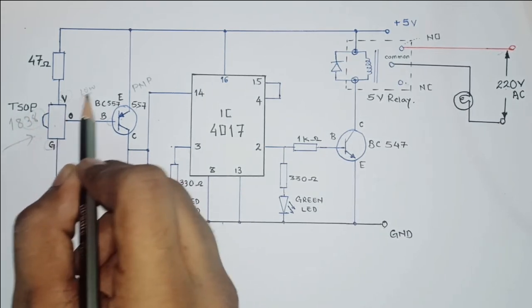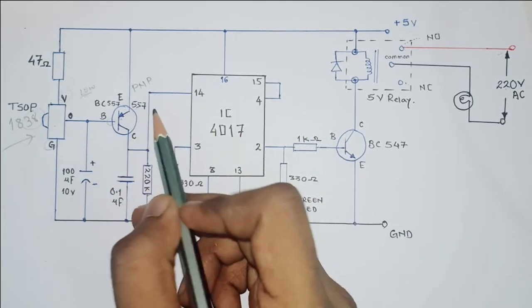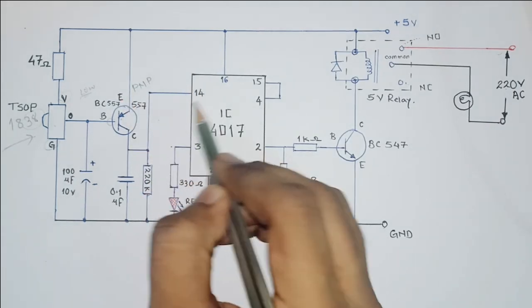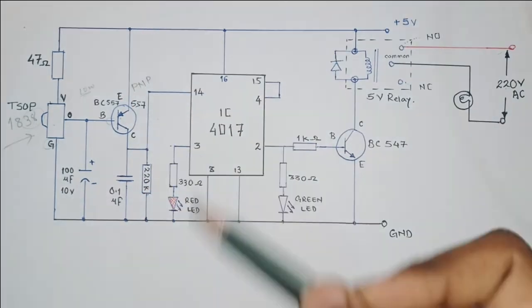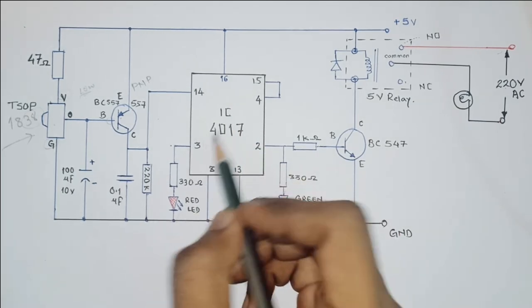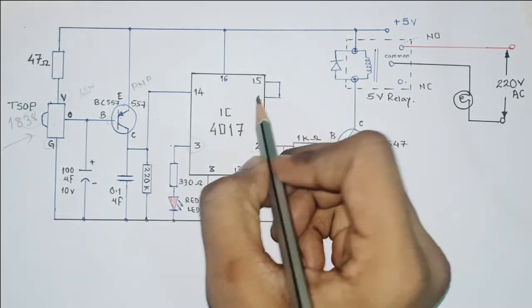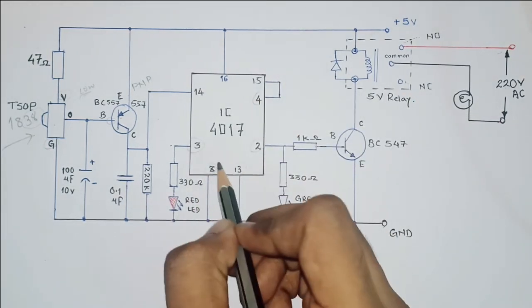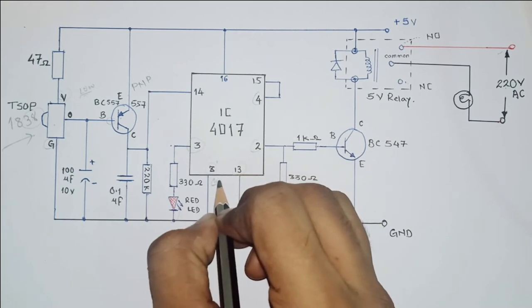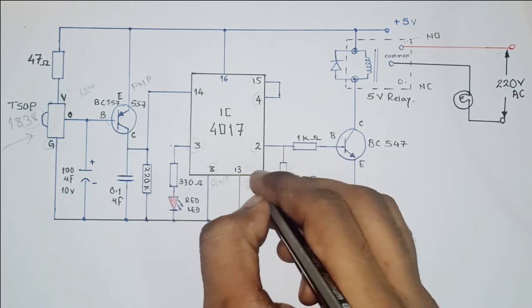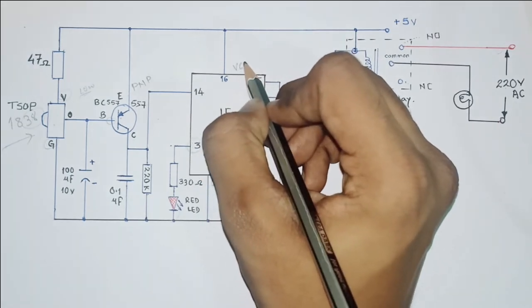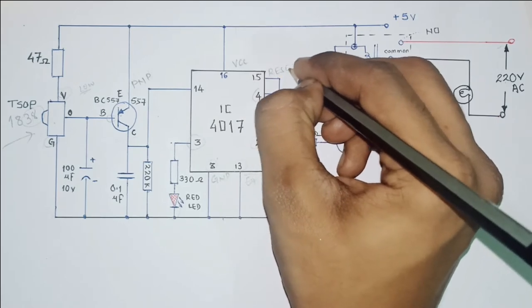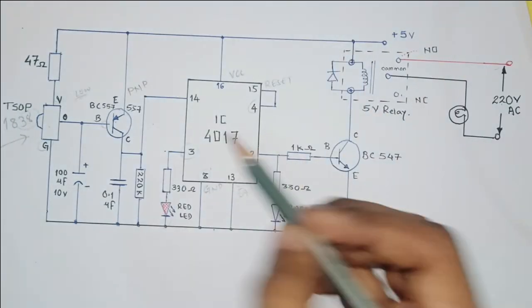That is going to give a clock pulse to pin number 14. Here we have the outputs: pin number 3, pin number 2, pin number 4. Pin number 8 is the ground pin, pin 13 is the enable pin, pin number 16 is the VCC pin which is to be connected with the power supply, and this is the reset pin.